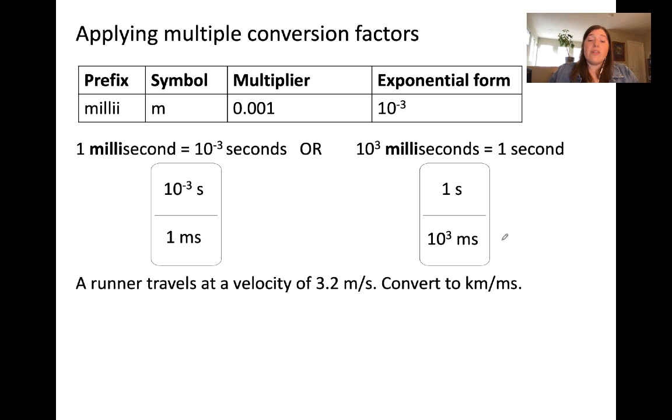To convert this quantity, 3.2 meters per second to kilometers per millisecond, we need to convert both the length component from meters to kilometers and the time component from seconds to milliseconds.